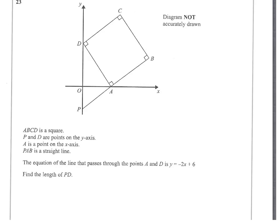I've been given some information about the square ABCD, the line PB, and the line DA. My task is to find the length PD.